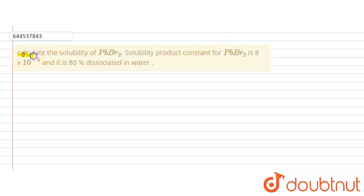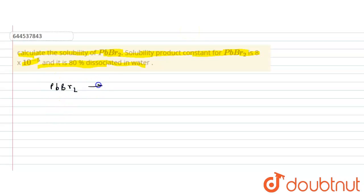Calculate the solubility of PbBr₂. The solubility product constant for PbBr₂ is 8×10⁻⁵ and it is 80% dissociated in water. PbBr₂ on dissociation gives us Pb²⁺ plus 2Br⁻.